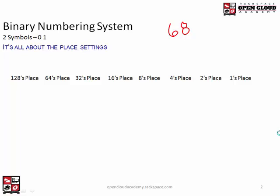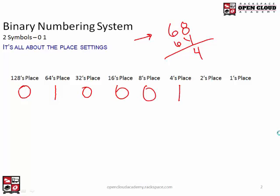How this starts is you find a number in the place settings that is as close to the number you want to convert as possible, without going over. I'm going to start on the left. I'll pick 68. So, 128 is bigger than 68, so I put a 0 there. 64 is as close as we get without going over, so we put a 1 there and subtract 64 from 68 — we get 4 left over. Then we keep going down: 32 is too big, 16 is too big, 8 is too big. So we take 4, subtract it, and that's where we stop. We put zeros in the remaining place settings.